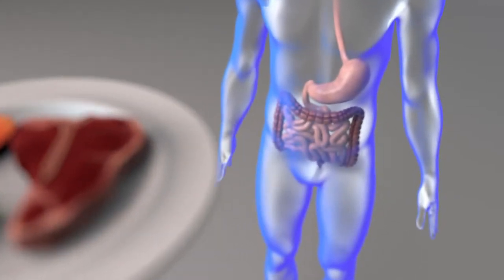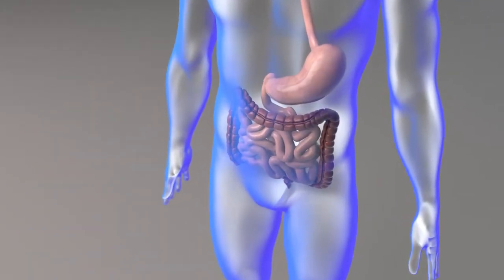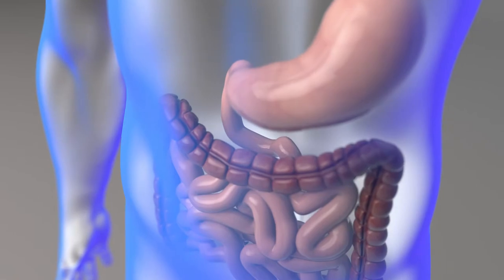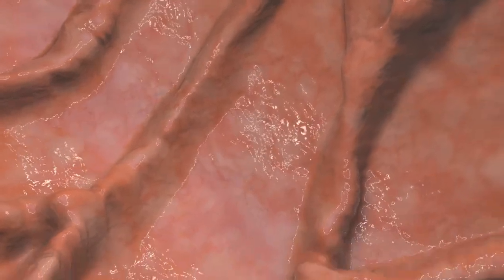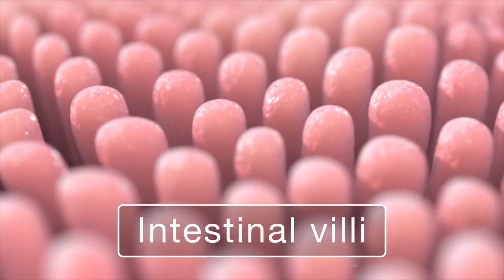Both forms of iron are released from their food matrices by proteases in the stomach and small intestine. The bulk of iron absorption occurs in the proximal small intestine. Iron absorption starts at the apical brush border membrane of the epithelial cells of the intestinal villi.